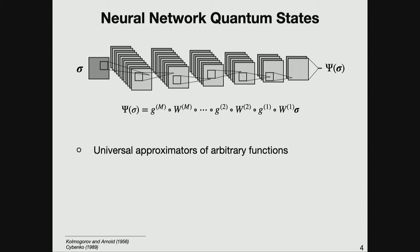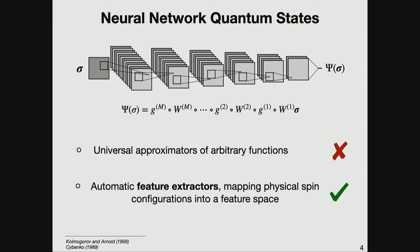Neural network quantum states are nonlinear maps defined as the sequential application of linear and nonlinear functions to the initial configuration. This approach is useful because universal approximation theorems ensure that by increasing the number of parameters, we can approximate arbitrarily well any function — in principle, also the ground state of a many-body Hamiltonian. However, in the modern deep learning era, neural networks are not seen as universal approximators but as feature extractors, and this is the point of view we want to use to define our parametrization.